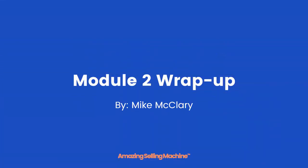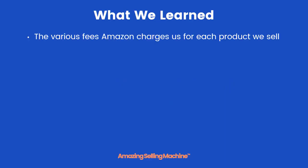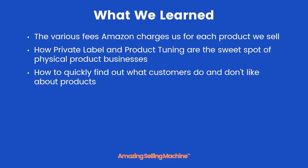Congratulations on completing module two of the Amazing Selling Machine. Here are all the things that we covered in this module: the various fees that Amazon charges us each time we sell a product, how private label and product tuning are the sweet spot of the physical product business models, and how to quickly find out what customers do and don't like about products by performing the research part of product tuning.